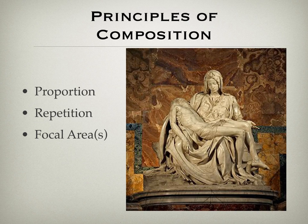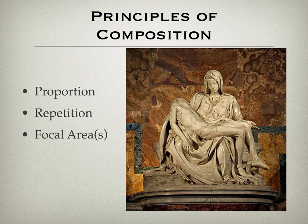We can also talk about repetition — made up of rhythm, harmony, and variation. You can see that in this work: look at the folds in her dress or robe — there is repetition within the drapery, with different patterns that help you understand the work more. You can also talk about whether components in a work are consonant or dissonant — whether they seem to go together or not.